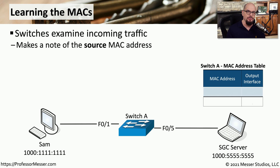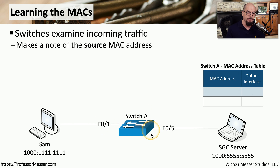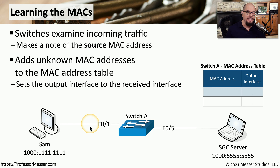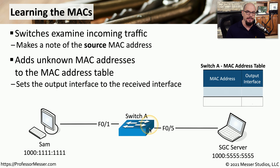Let's look at the process a switch goes through to maintain its internal MAC address table. We have two devices on this network — SAM and the SGC server — with a switch between them. Right now, no one has sent any traffic to this switch, so the MAC address table is completely empty. If the switch receives traffic not currently listed in the table, it will add that MAC address and the output interface to the table.